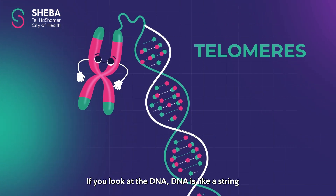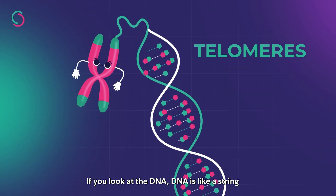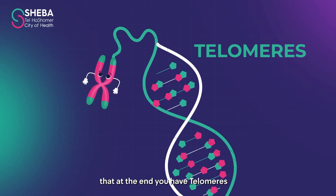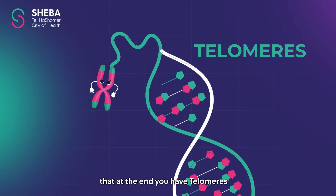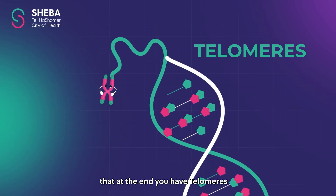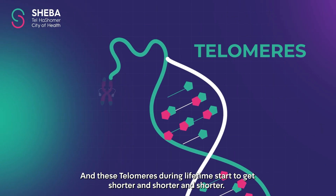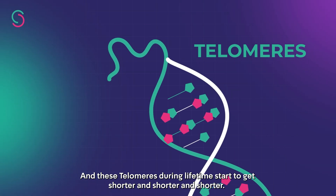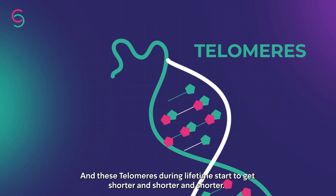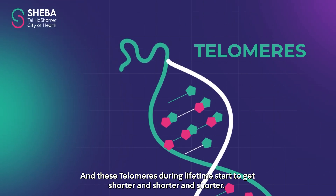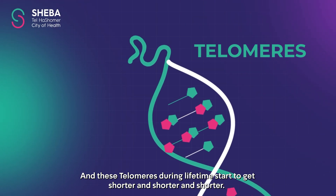If you look at the DNA, DNA is like a string that at the end you have telomeres. And these telomeres, during lifetime, start to get shorter and shorter and shorter.